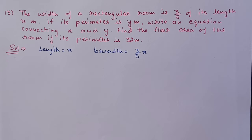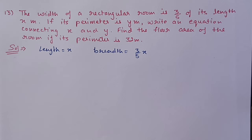Question 13: The width of a rectangular room is 3/5 of its length of x meters. If its perimeter is y, write an equation connecting x and y. Find the floor area of the room if the perimeter is 32 meters.